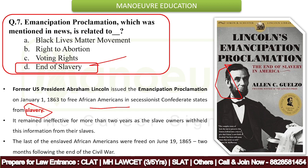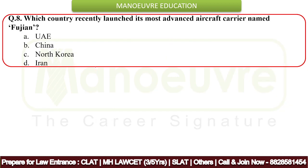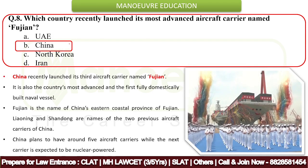Next question: which country recently launched its most advanced aircraft carrier named Fujian? The correct answer is China. Be careful not to confuse it with Japan due to the name. China recently launched its third aircraft carrier named Fujian — it is also the country's most advanced and first fully domestically built naval vessel. Fujian is named after China's eastern coastal province. China's two previous aircraft carriers are named Liaoning and Shandong. China also plans to have around five aircraft carriers, with the next expected to be nuclear powered.